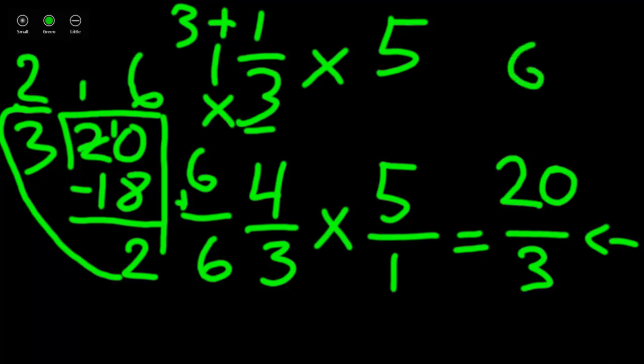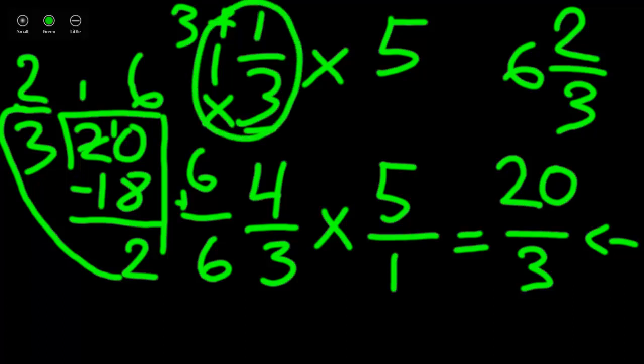Which will be written as a mixed number, 6 and 2 thirds for our answer. Remember, anytime you have a mixed number, you need to change it to an improper fraction. And if you have a whole number, you need to change it to a fraction by writing it over 1. Then you can use your multiplication algorithm for fractions.